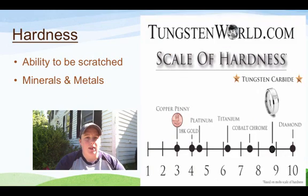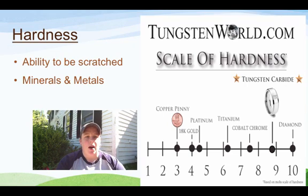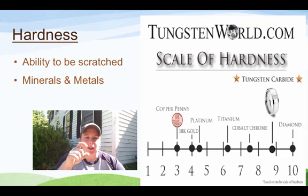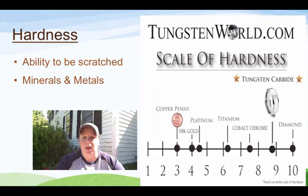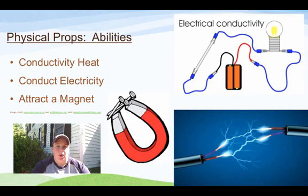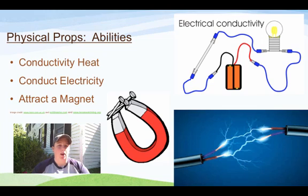Hardness means its ability to be scratched, and we're going to talk a lot about hardness when we're talking about minerals like diamonds and metals. Can you literally take your fingernail and scratch it or not? There's actually a scale — usually one to ten, with one being the weakest and ten being the strongest. Continuing on: can it conduct heat? Can it conduct electricity? And can it attract a magnet? All of these are physical properties of solids.